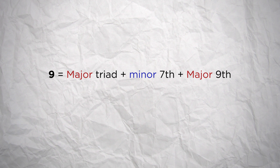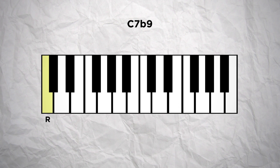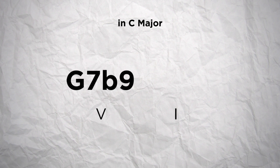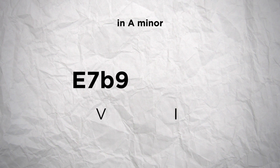To add more tension to this dominant 9th chord, you could alter it by lowering the 9th by a semitone. So the chord would be made of the same dominant 7th chord but with a minor 9th added. This type of chord would be noted 7b9. So for a C chord, it would be made of the root note C, the major 3rd E, the perfect 5th G, the minor 7th Bb, and the minor 9th Db. And it would be used and resolved in the exact same way as the dominant 9th chord. So in C major, that would make G7b9 to a C major chord, and in A minor, that would make E7b9 to A minor.